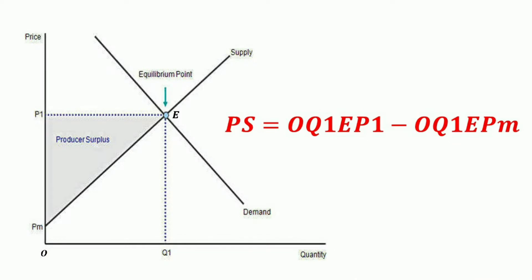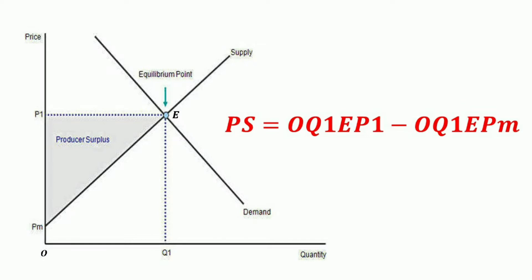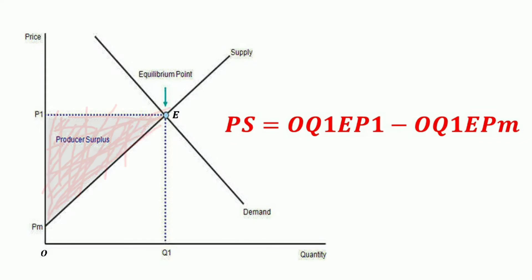The demand curve is downwardly sloping and the supply curve is upwardly sloping. The point where the demand and supply curves intersect each other is called the equilibrium point. E is the equilibrium point, P1 is the market-determined price, and Q1 is the market-determined quantity. The area between the supply curve and the horizontal price line — that is, the area above the supply curve and below the equilibrium price — is the shaded area known as producer surplus.